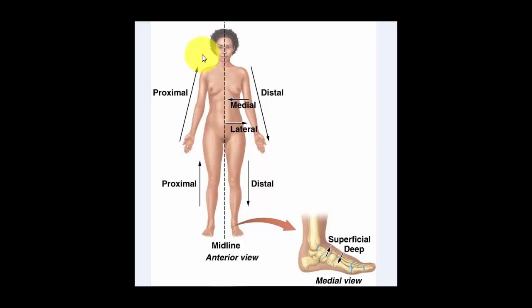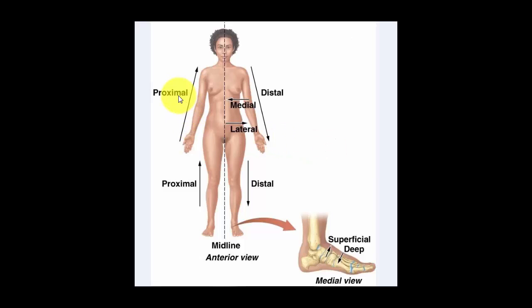Next we have directional terms. This person is standing in anatomical position as mentioned earlier. The terms distal, proximal, medial, lateral, superficial, and deep are all used to describe different areas of the body and anatomical structures. The terms proximal and distal refer to limbs. Proximal means closest to the point of attachment. Distal refers to anything that is further from the point of attachment, such as arms and legs.